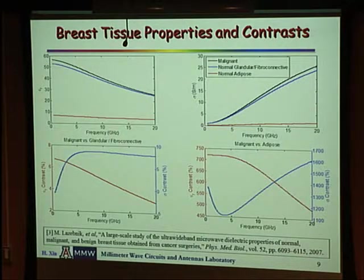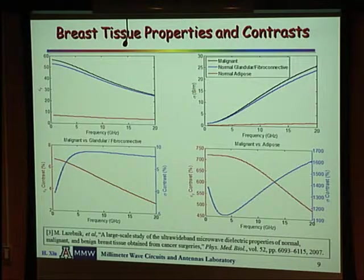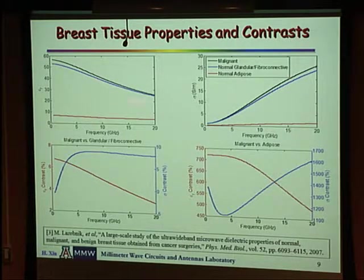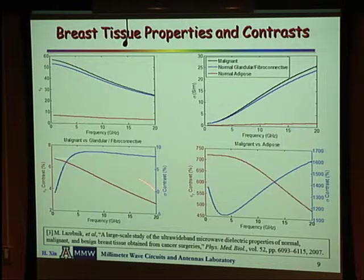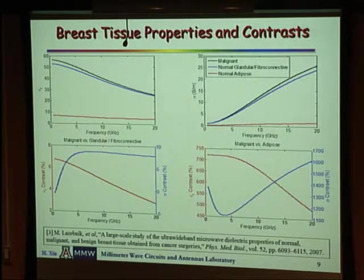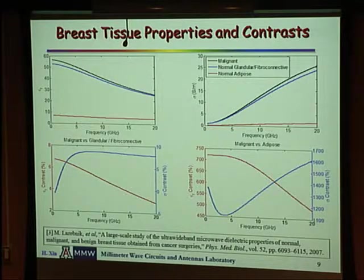The underlying principle involves looking at breast tissue properties and contrast. Plotted here are the dielectric constant or relative permittivity and the conductivity — the real and imaginary parts of permittivity. The black line is malignant tissue, the blue line is normal glandular or muscle tissue, and the red is adipose or fat. In both dielectric constant and conductivity, the malignant tumor has higher values. The percentage difference is very encouraging: comparing fat and malignant tumor there's a few hundred percent difference — even up to 1,600%. However, comparing malignant and glandular tissue, the difference is only about 10%, which is a potential issue I'll come back to.